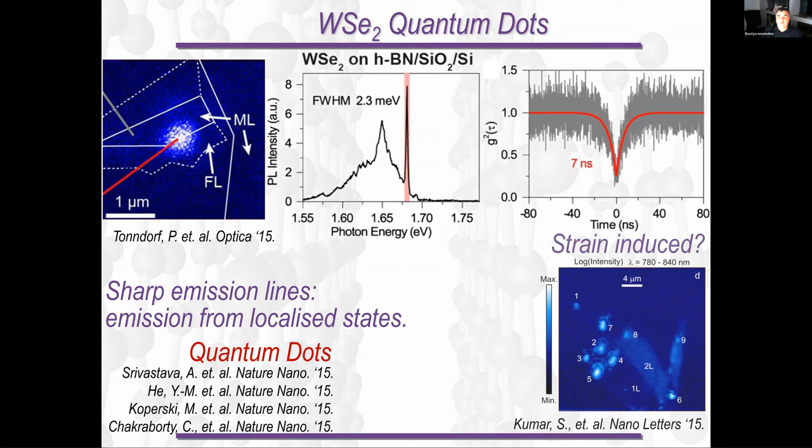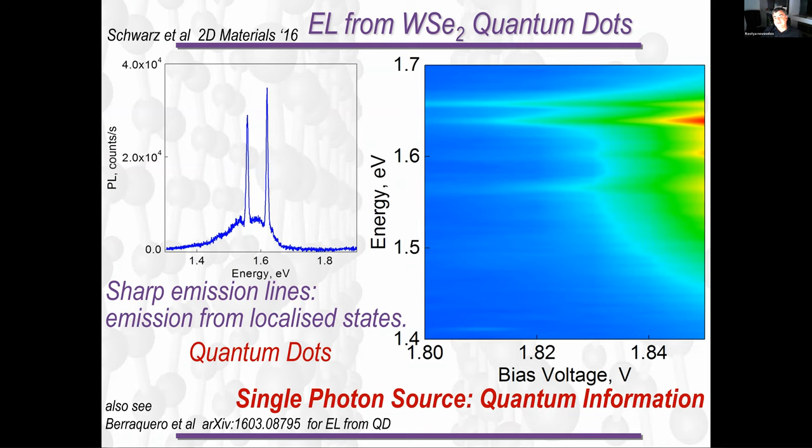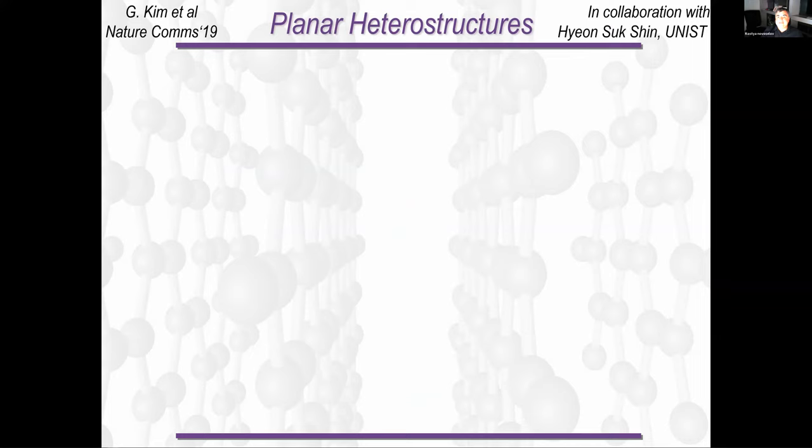Here we started with boron nitride and then added two layers of graphene and then two layers of boron nitride, and then two more layers of graphene again. The quality, especially if you look at the dark field image, can be extremely high. You won't be able to see where your boron nitride layer stops and where your graphene starts. And the complexity of these materials can be extremely high.